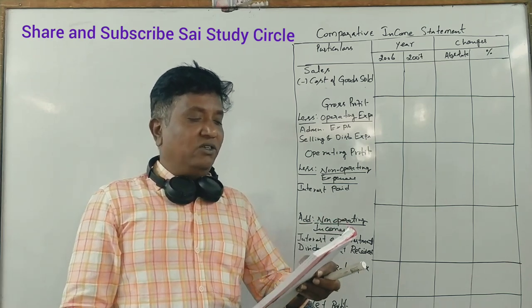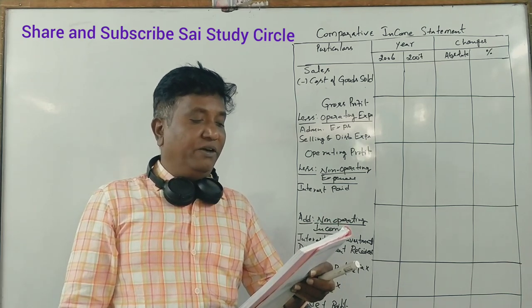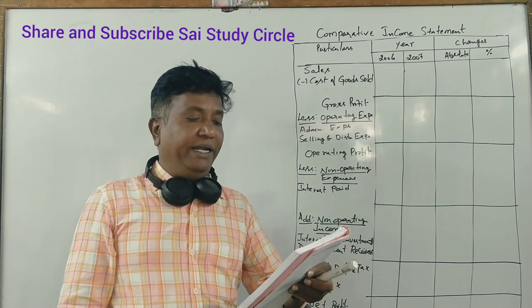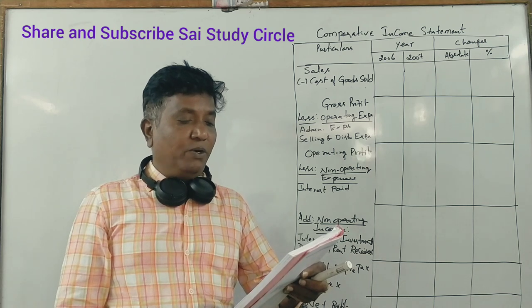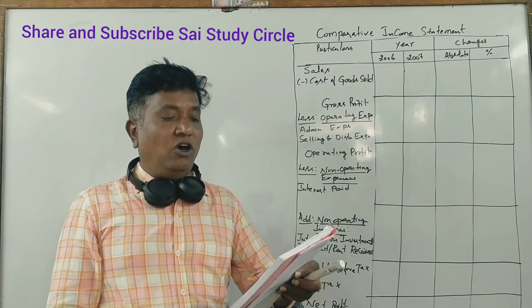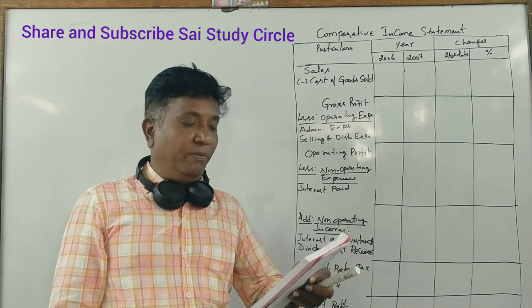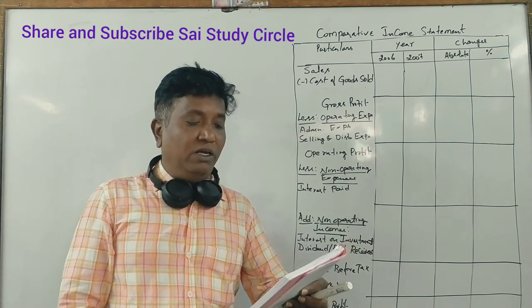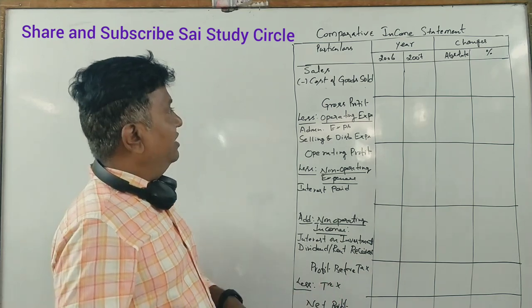The line items are: net sales, less cost of goods sold, gross profit, operating expenses, operating profit, non-operating expenses, non-operating income, and net profit.